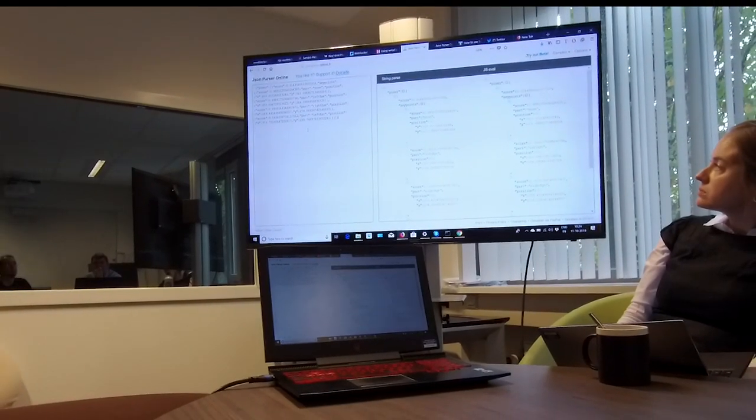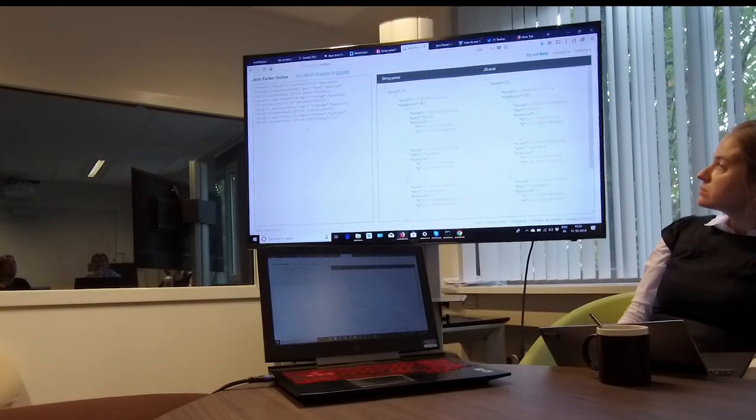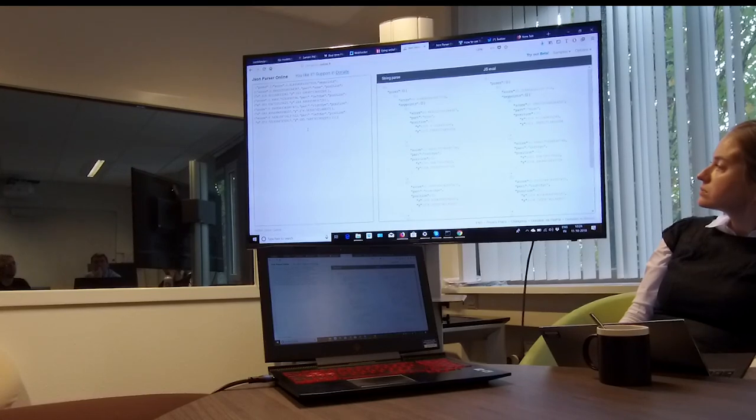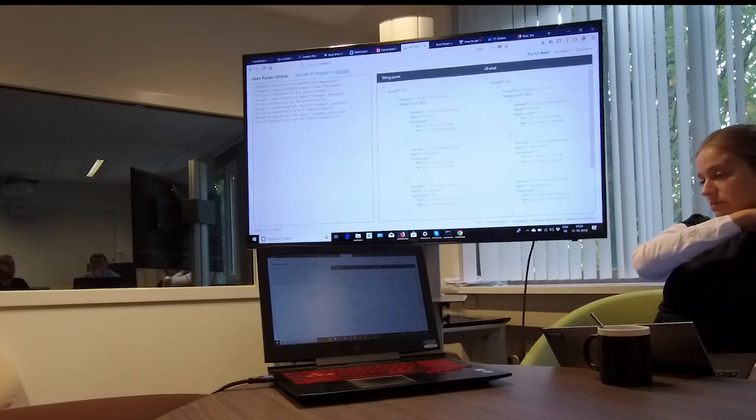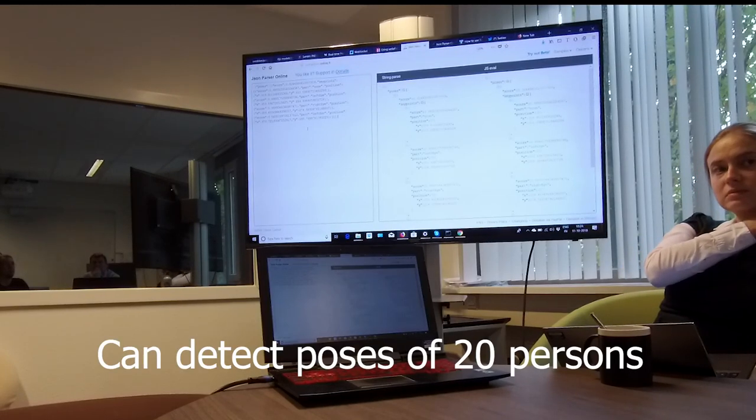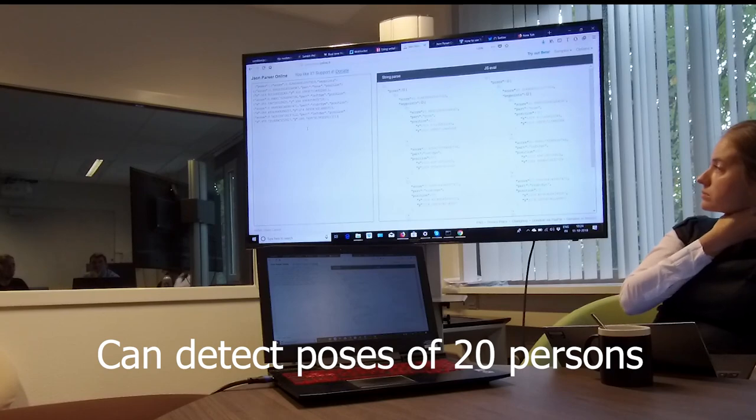So it has X and Y values. From the left corner, it is the origin. And when you go below, it increases. And when you go right, it increases. And so this one is one pose. So if there are different persons, then it lists as Pose1, Pose2, Pose3, Pose4, something like that.